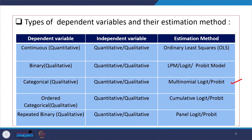If your dependent variable is ordered categorical — for example, educational attainment — you are supposed to apply a cumulative logit model or cumulative probit model. These are called cumulative models.